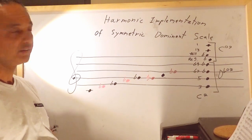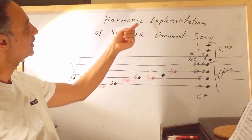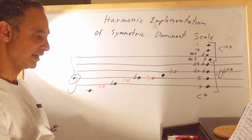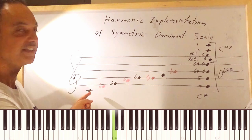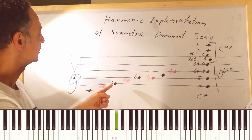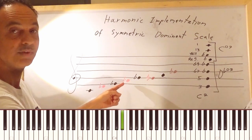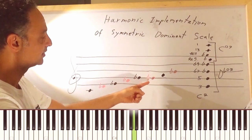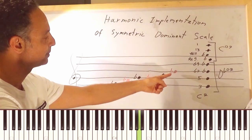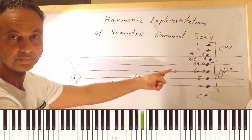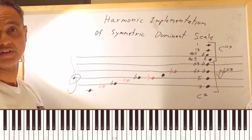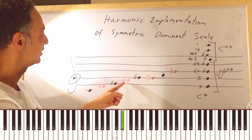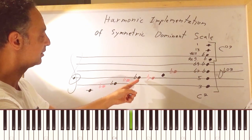In this video I will talk about the harmonic implementations of the symmetric dominant scale. The symmetric dominant scale goes like this: C, D flat, E flat, F flat, G flat, G natural, A, and B flat. You can see it as half step, whole step, half step, whole step — half, whole, half, whole, half, whole.